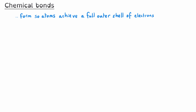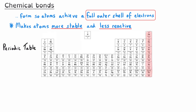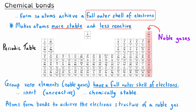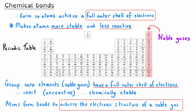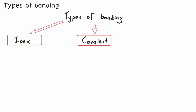Chemical bonds are formed so atoms can achieve a full outer shell of electrons. This makes atoms more stable and therefore less reactive. In the periodic table, the elements of group zero are called the noble gases — that's this column on the right-hand side. These elements have a full outer shell of electrons, which makes them chemically inert — in other words, they are unreactive and chemically stable. The other atoms in the periodic table react and form chemical bonds until they have the same electronic structure as one of the noble gas elements. There are three different types of strong chemical bonds: ionic, covalent, and metallic.